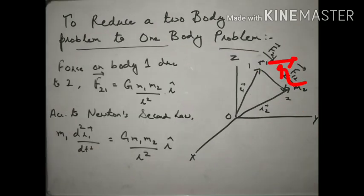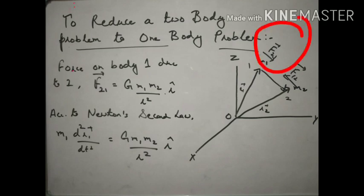These two bodies are exerting gravitational force on each other. The distance between the two bodies is r and the unit vector will be r-cap. If we consider the gravitational force acting on body 1 due to body 2, it will be f12 which is equal to G·m1·m2 upon r² into r-cap. If we apply Newton's second law of motion here — force is equal to mass into acceleration.